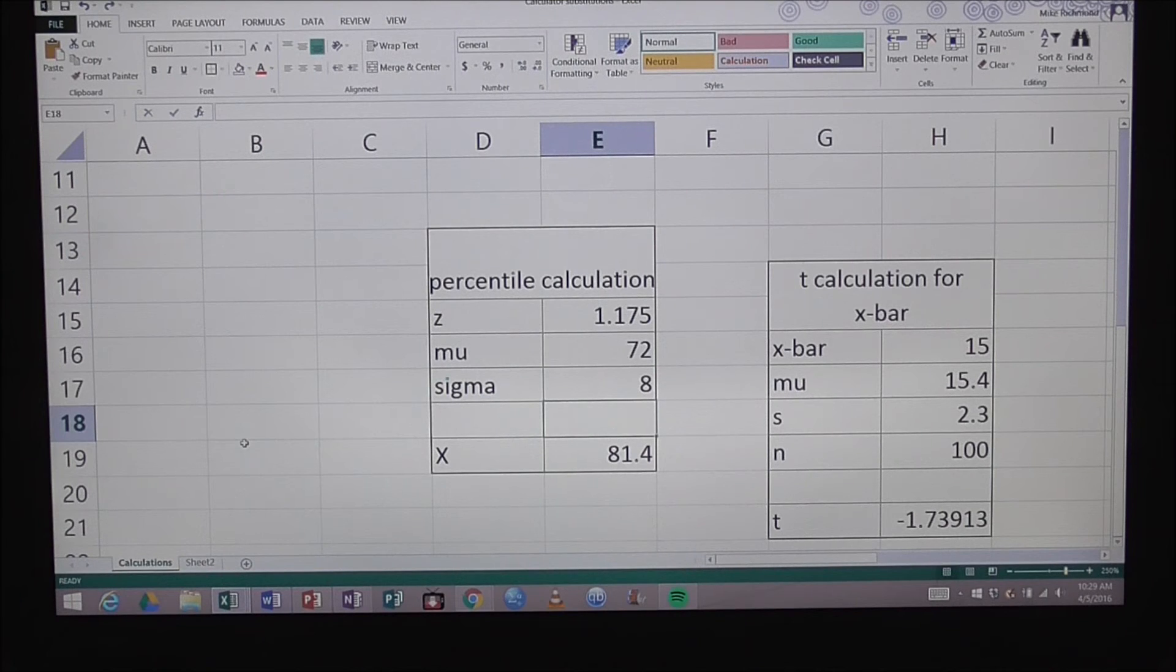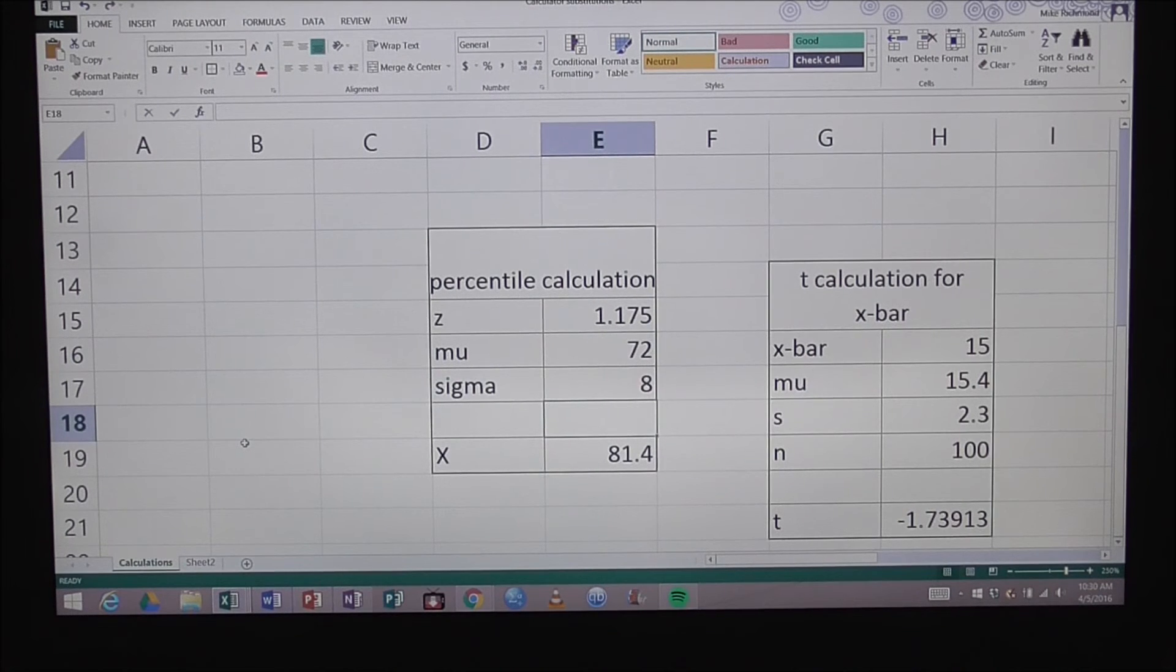Now that I know what my z-score is, I'm going to use my calculator substitutions spreadsheet in Excel to calculate the percentile I'm looking for. If you're looking at this and you don't recognize what I'm doing here, you can go and watch my mini lesson about using Excel as a calculator substitute. I've got a little table portion set up here where I can enter in my z, my mu, and my sigma, and then the calculated value for x will be returned. And in this case, that will be the percentile.